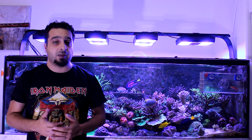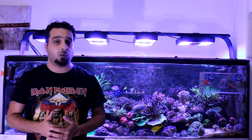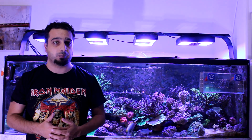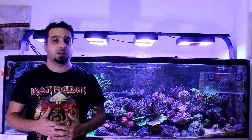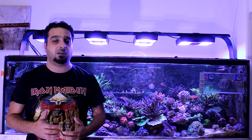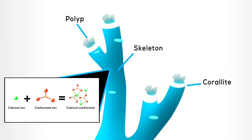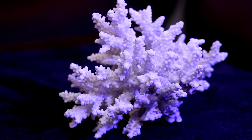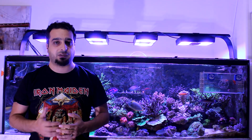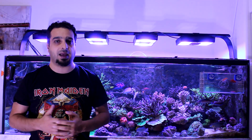After introducing corals to the tank, they start to consume calcium, alkalinity, and magnesium and other trace elements — therefore we will need to supplement these used-up elements. Corals take a specific ratio of calcium and carbonate from the water to form calcium carbonate, which is used to build the coral skeleton. Reefers should use a balanced calcium and alkalinity additive system.